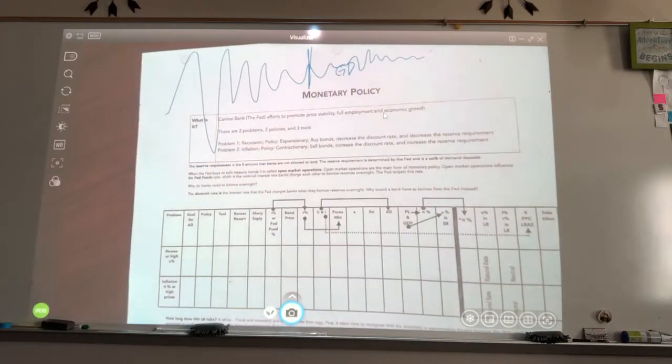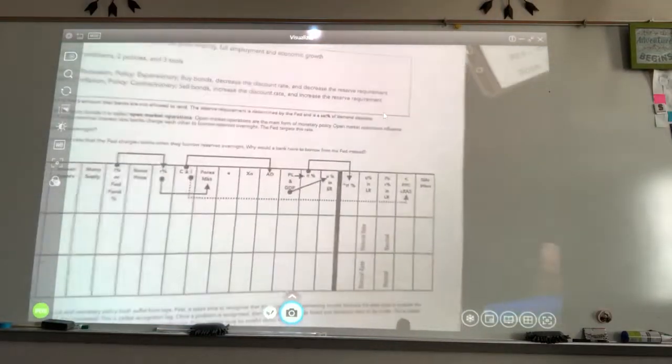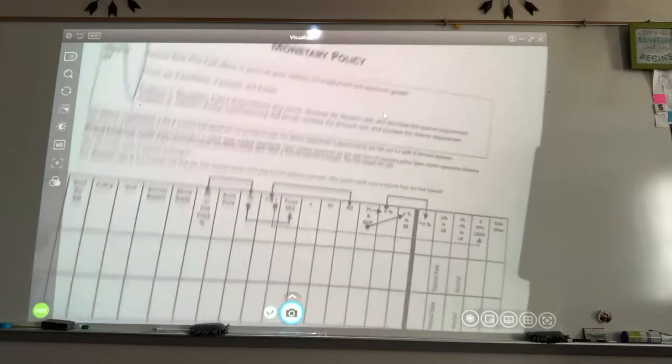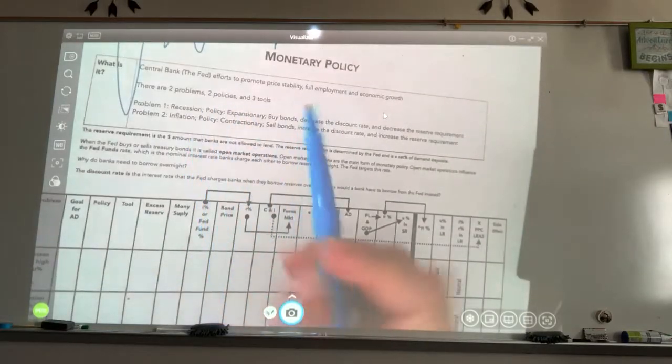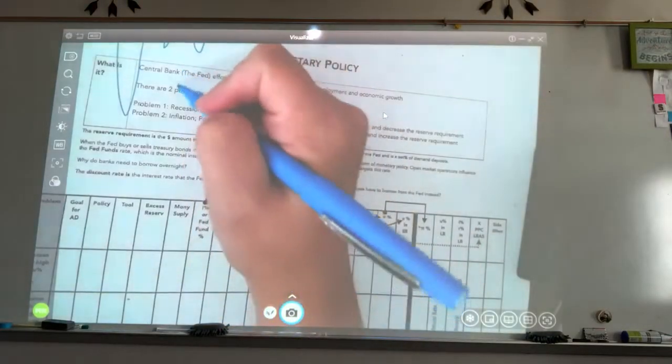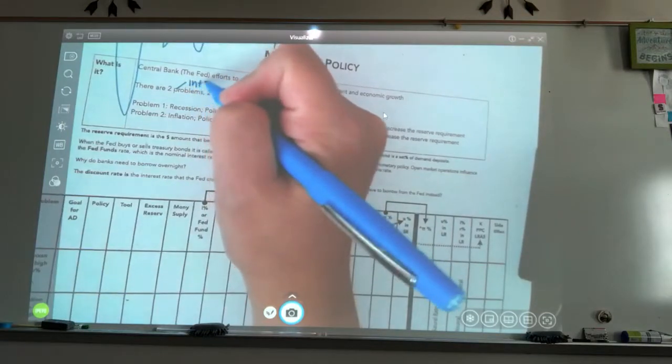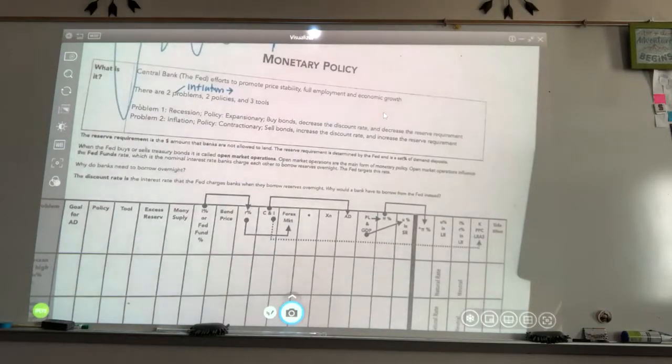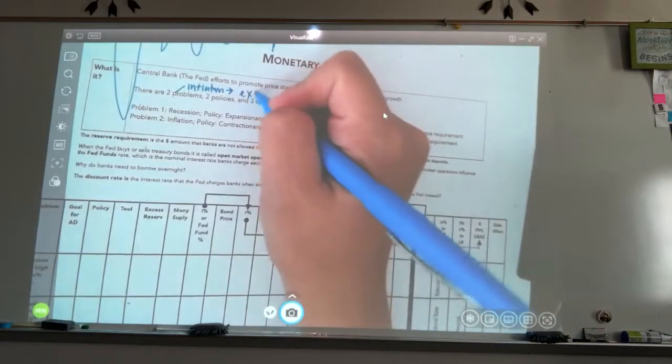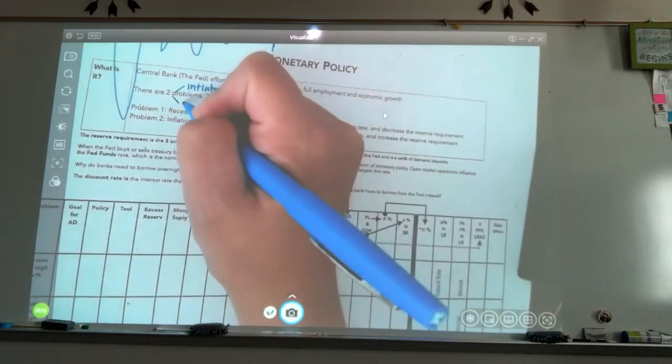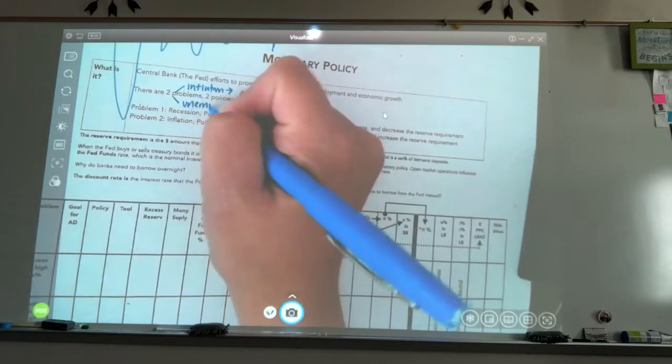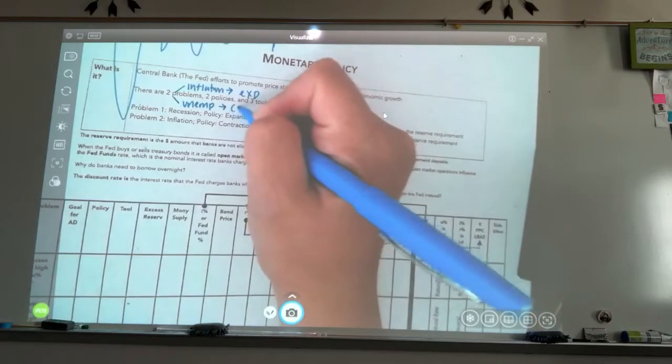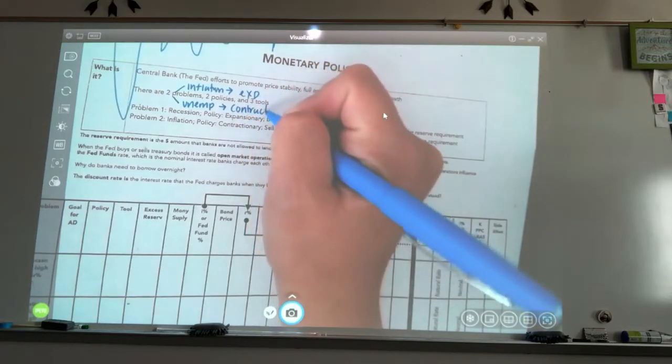And so we're going to see there's always two problems. Either we're always dealing with problem one which is inflation, right? And when we have inflation, what phase of the business cycle is that? Expansion. This is an expansion. My other problem is what? Unemployment. And when I have unemployment, what phase of the business cycle am I in? Contraction.